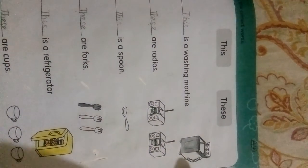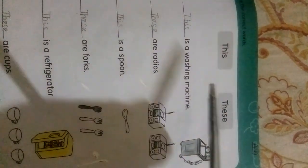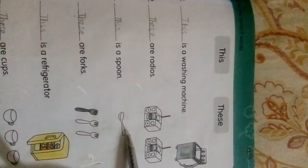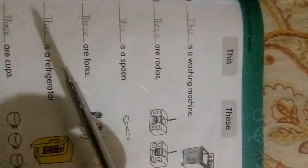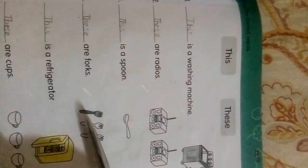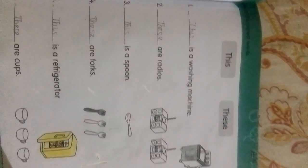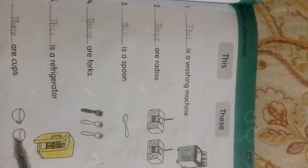This is a cake washing machine. So, what do I use for it? This. Radios. Two are these. Spoon. One is this. Fork. Two are forks. Three are these. Refrigerator. One is this. Cups. Three are these. Okay?